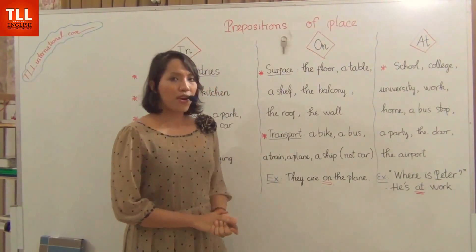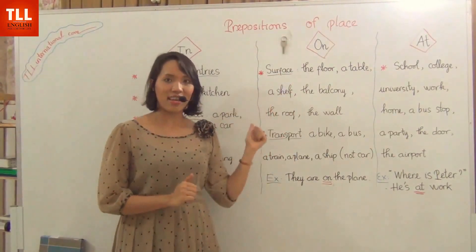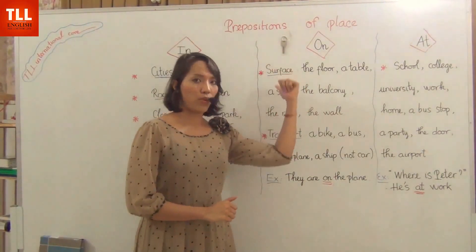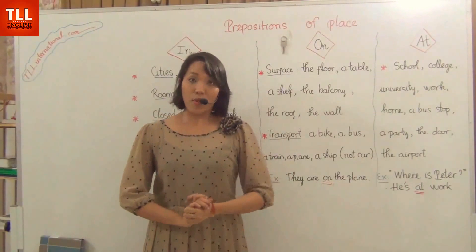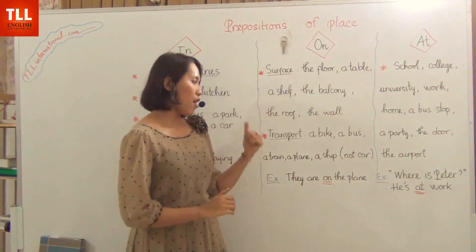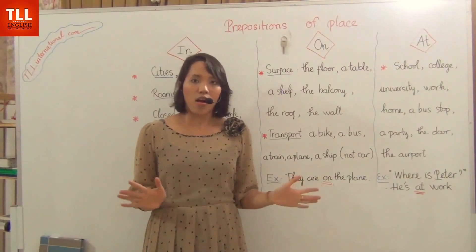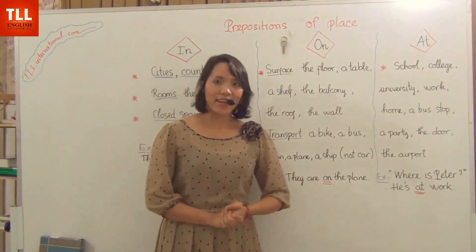For example, look at the key. If somebody asks you where is the key, what is your answer? It is on the board, because the board is the surface. For transport stations, for example a bike, a bus, a train, a plane, a ship—not a car—we use ON. For example, they are on the plane to Paris.